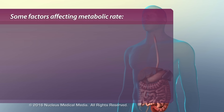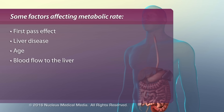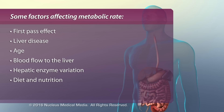A few of the factors affecting metabolic rate are the first-pass effect, liver disease such as cirrhosis, neonates and the elderly who have decreased liver function, compromised blood flow to the liver, variation in amount and type of hepatic enzymes, poor diet and nutrition affecting normal liver function, and higher circulating drug levels due to dosage or patient's weight taking longer to metabolize.